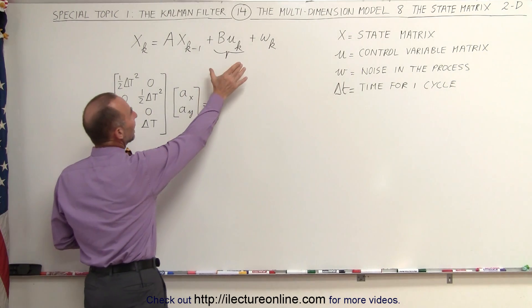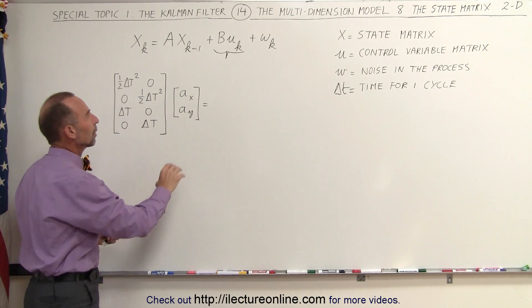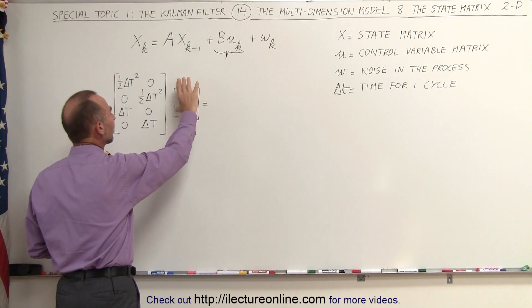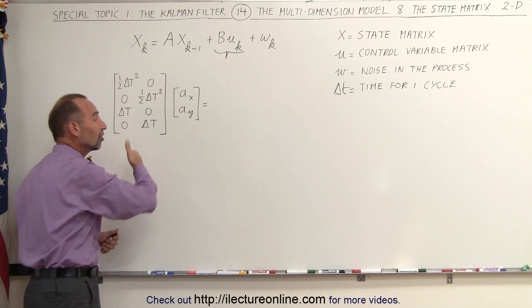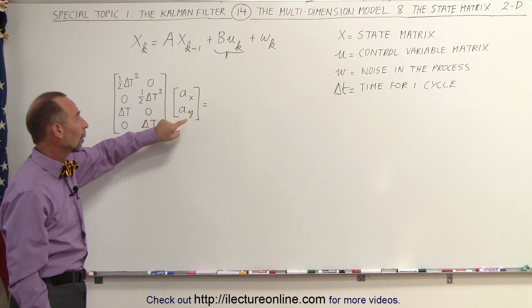It is this part of the state matrix equation that allows us to adjust for the acceleration. Here what we call the variables that control, these are the control variables that control the changes to the position and the velocity because now the acceleration is known in the x and the y direction.